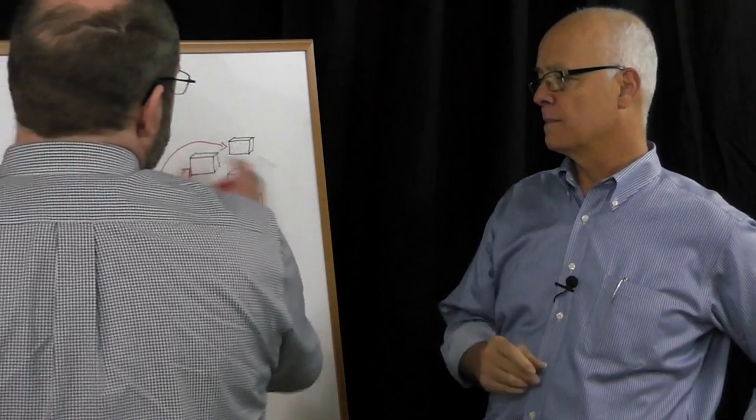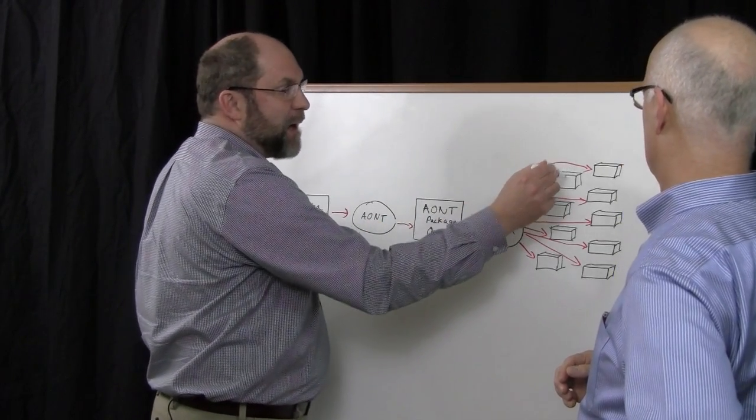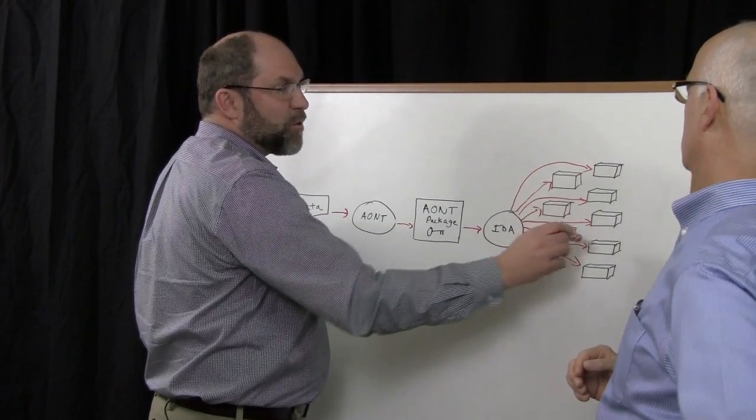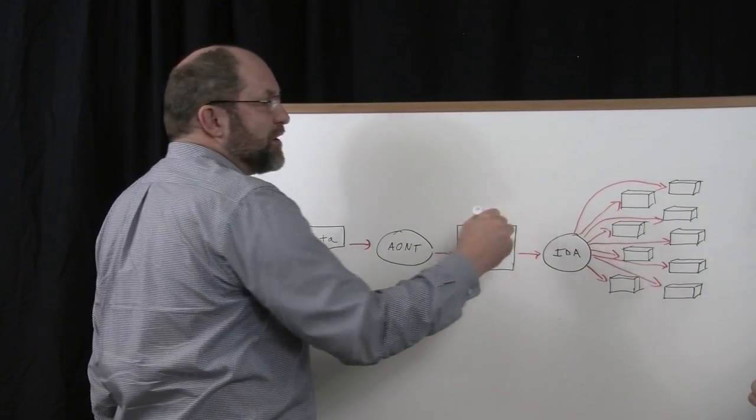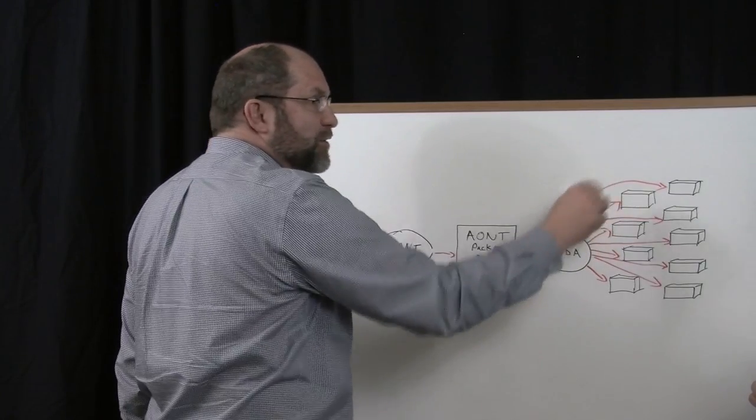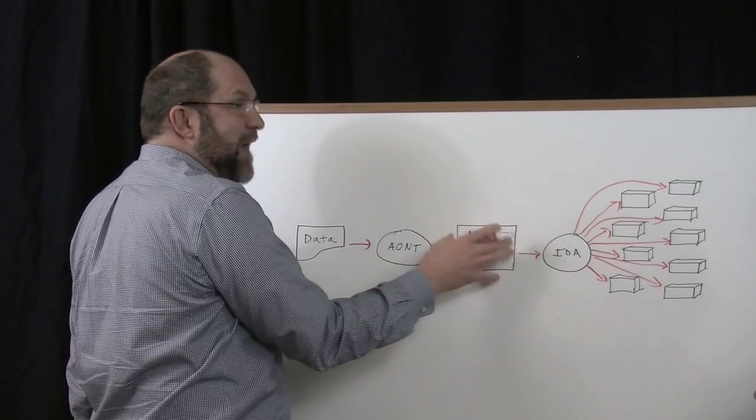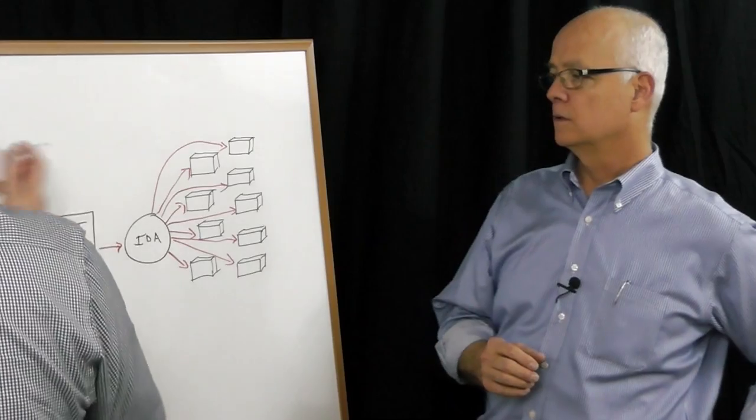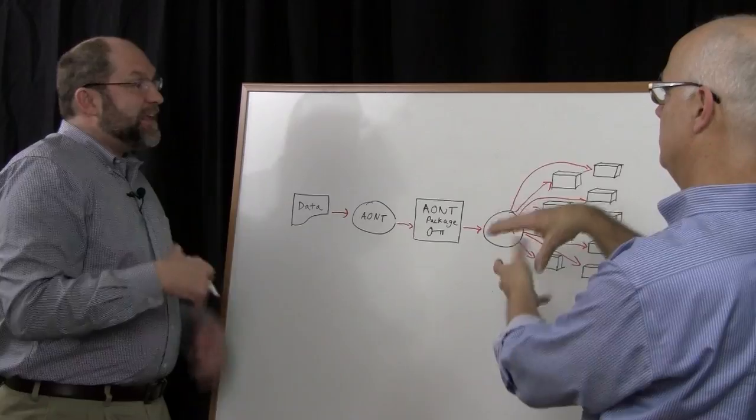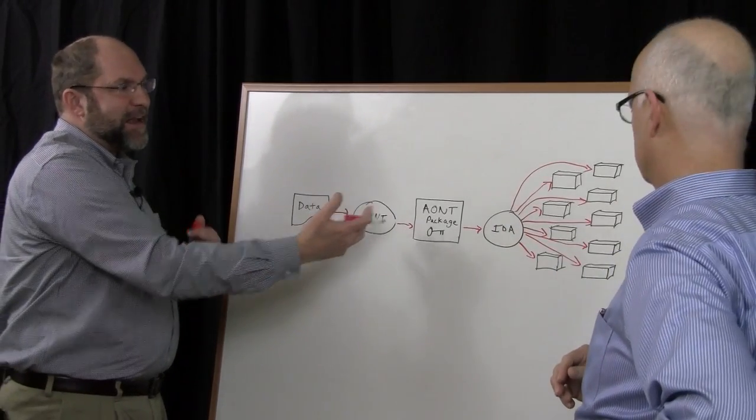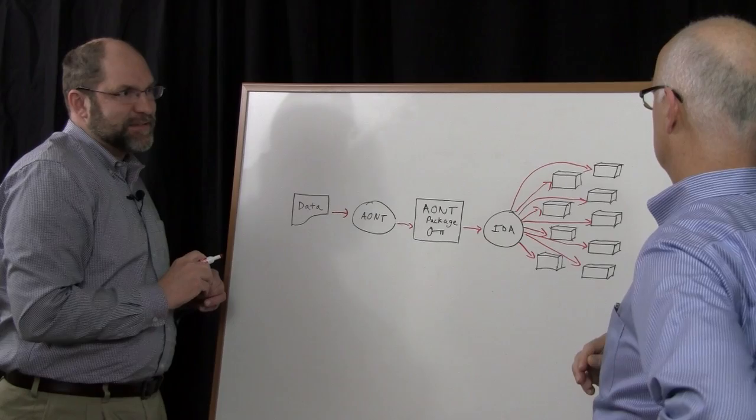Now in our architecture, because of dispersal, they'd have to successfully compromise five different storage nodes, first of all. Be smart enough to know how to take those five slices and reverse the IDA to create the original package, and then use the key to decrypt it. So you don't have a universal key. You've got effectively a separate key. The key really becomes part of the data and is further obscured through the information dispersal process.